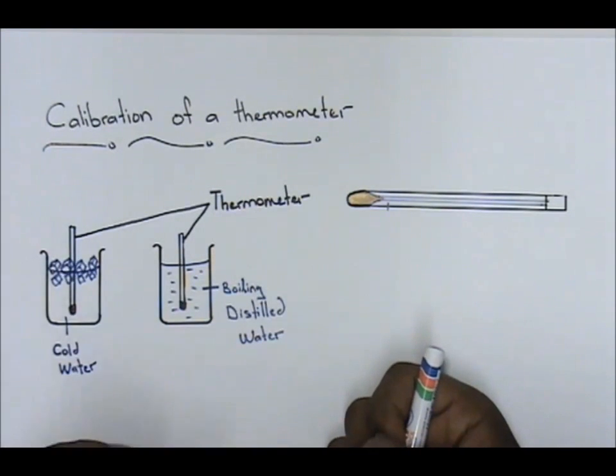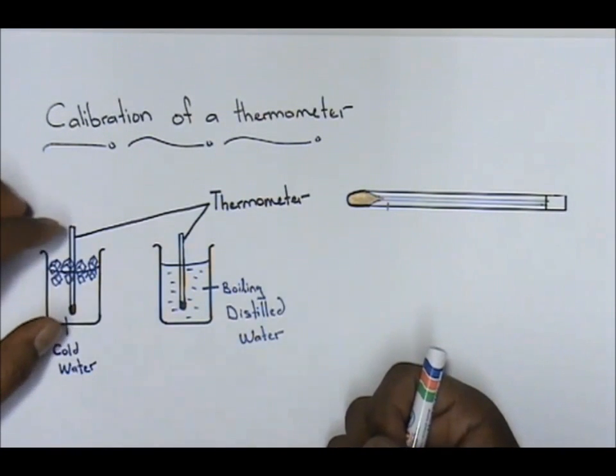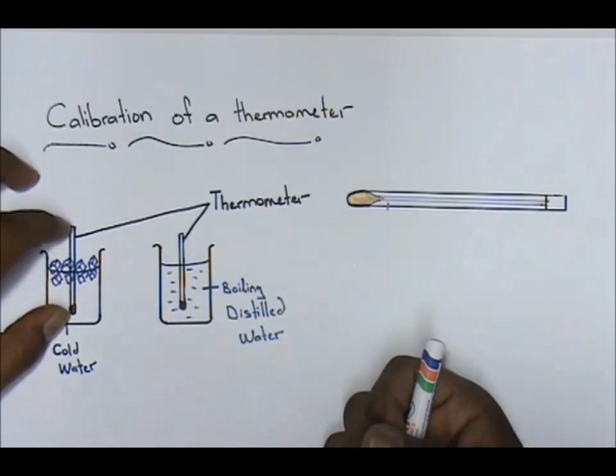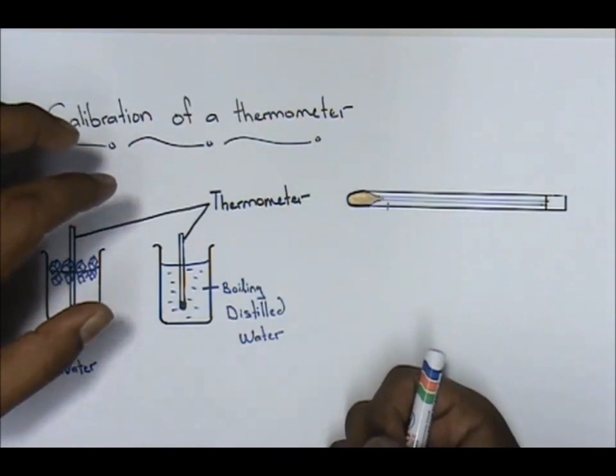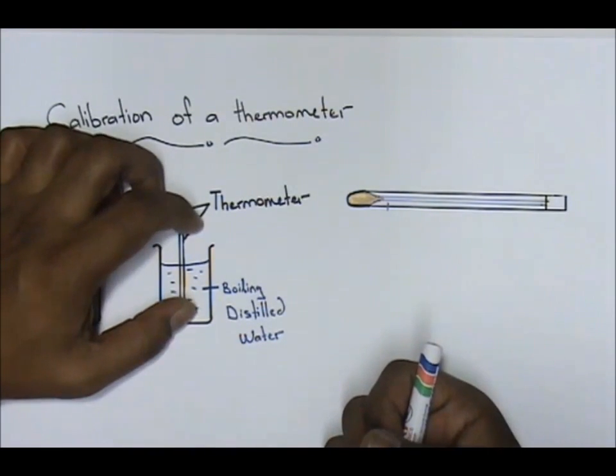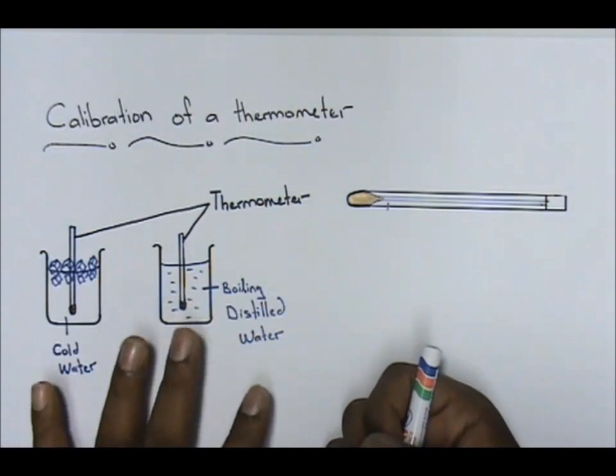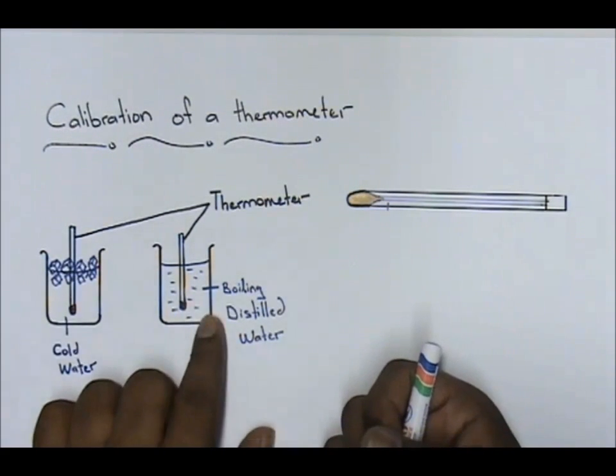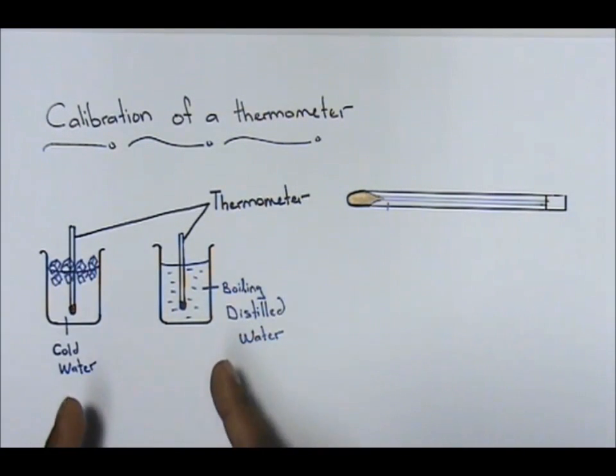Now what I'm going to do is first, I'm going to put the thermometer here in ice-cold water. And then I'm going to put the thermometer here in boiling water. Remember, the water that I'm using, whether ice-cold or boiling water, both of it is distilled water.